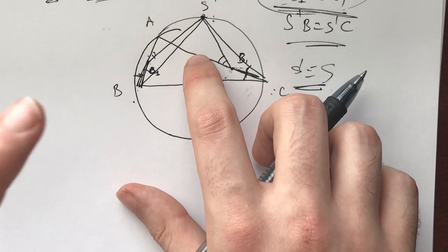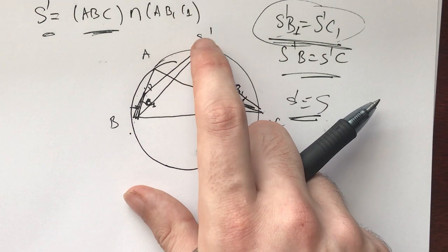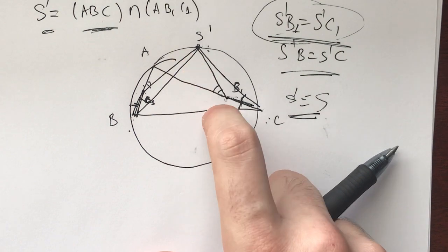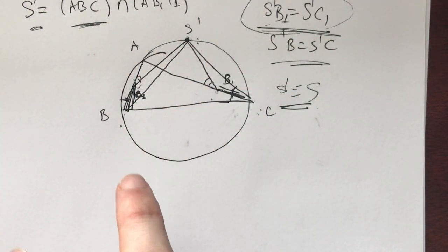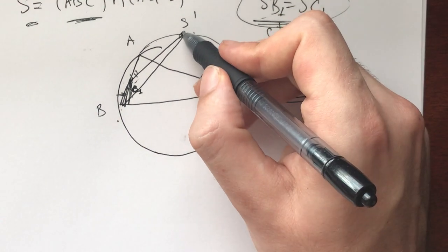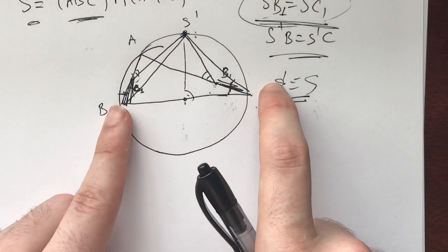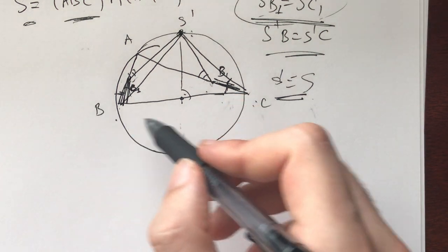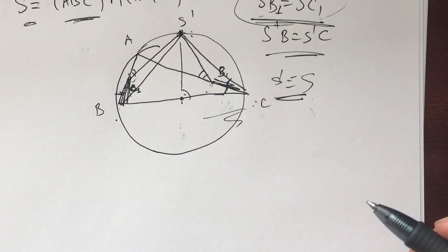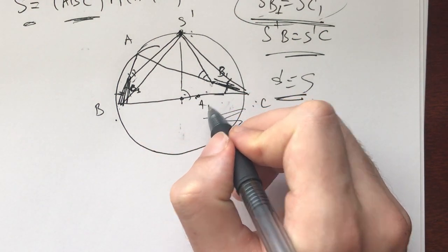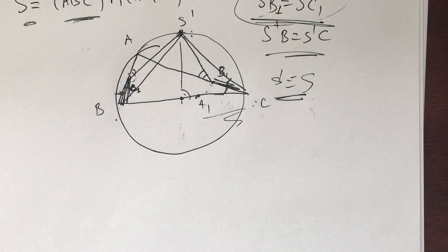From here there are two or three ways to proceed. One way is to use the same symmetry argument on the other side. Another is to ask: now that S is on the perpendicular bisector of BC, does it give us anything else? Are there other interesting points on the circumcircle? And we could also try a trigonometric approach. I'll give you 20 minutes to pick a path and stick with it.